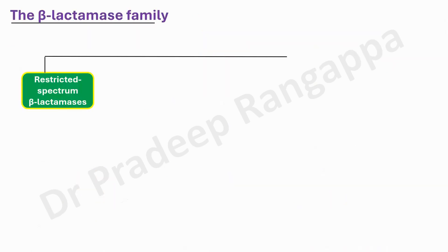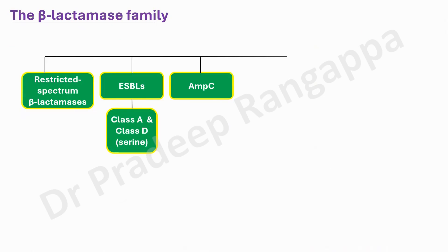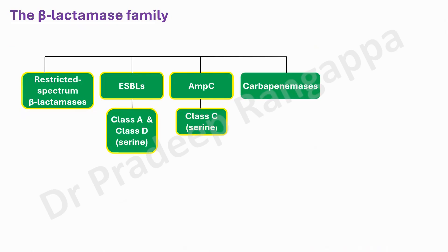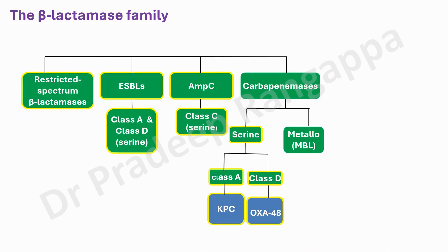To recapitulate our beta-lactamase family using the Ambler classification: these are enzymes produced by organisms to confer resistance to antibiotics that have beta-lactam rings. OSBL is ordinary spectrum beta-lactamase; ESBL is extended spectrum beta-lactamase, with class A and class D belonging to serine producers, and AmpC is class C. For carbapenemases, serine-based include class A (KPC) and class D (OXA-48), while metallo-beta-lactamases belong to class B — NDM, VIM, and IMP.